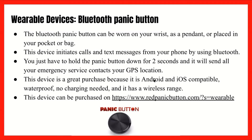There's also a Bluetooth panic button. It can be worn on your wrist as a pendant or placed in your pocket or bag. This device initiates calls and text messages from your phone by using Bluetooth. You just have to hold the panic button down for two seconds and it'll send all your emergency service contacts your GPS location. This device is great because it is Android and iOS compatible, it's waterproof, it doesn't need to be charged, and it has a wireless range. It can be purchased on the link displayed on the screen. One caveat: if you're placing it in your pocket, you only need to hold it down for two seconds to send an emergency SOS — that could be triggered inadvertently, similar to a butt dial.